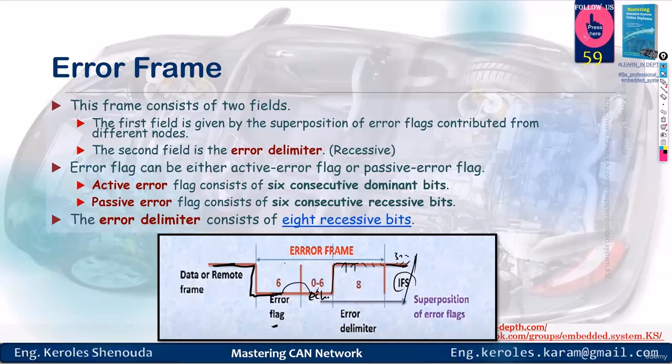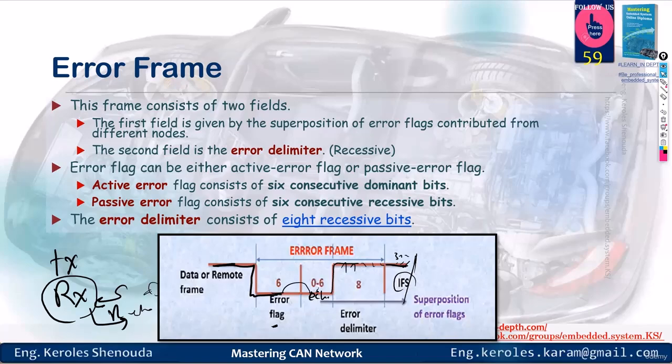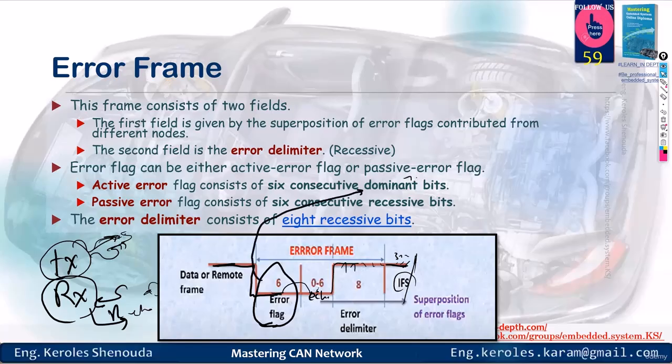This error frame is sent whether you're a transmitter or receiver facing an issue. Let's say you receive something incorrectly, so you sent an error frame. Hence, anyone who receives this error frame should start sending to you again, or something similar. Either the transmitter sends something and no one responded, or they send something and an error occurred, so they send another error frame. This error flag typically holds 6 bits. These 6 can either be all dominant, meaning all zeros, or all recessive, which means all ones. If they are dominant, they represent an active error. If they are recessive, they represent a passive error.